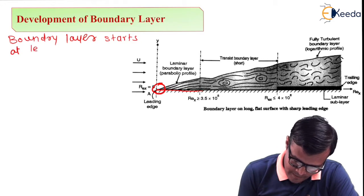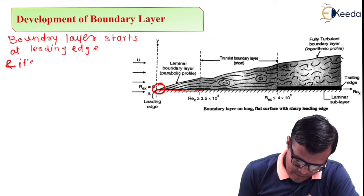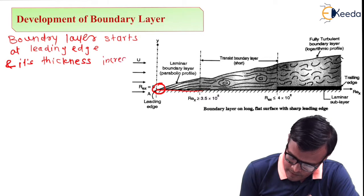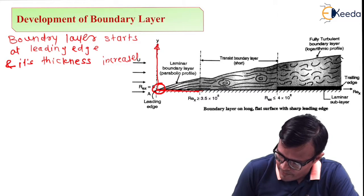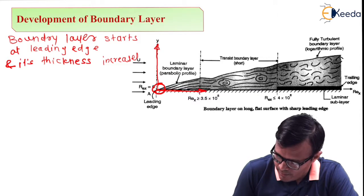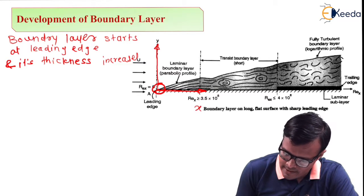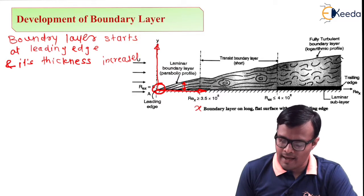Boundary layer starts at the leading edge and its thickness increases. Here we have considered this reference axis as y-axis and this starting point a as origin and this axis as x. So as value of x increases, the thickness of boundary layer increases continuously as in the figure.